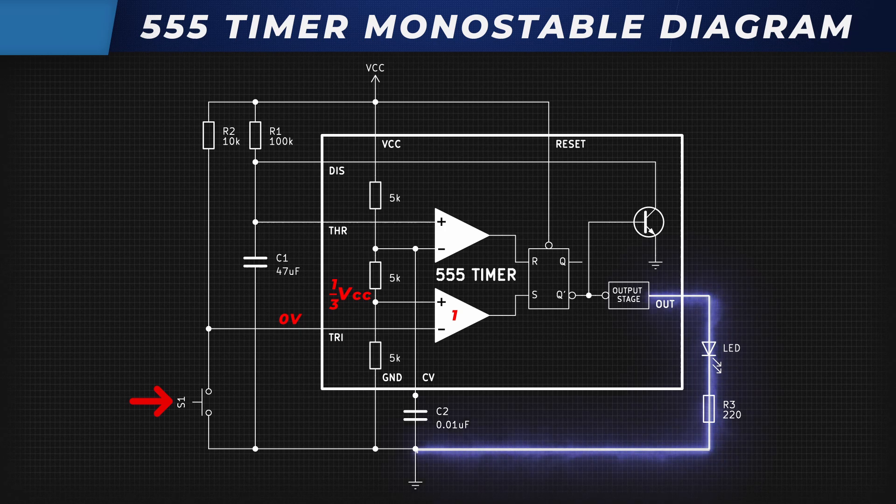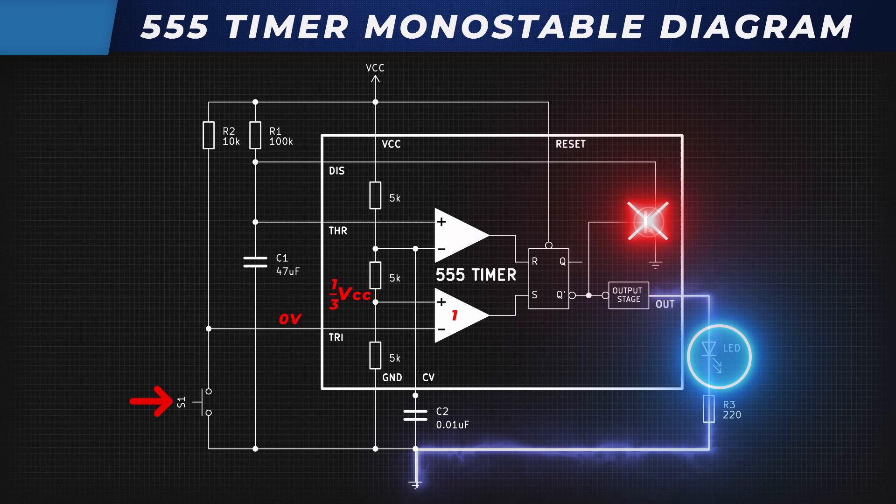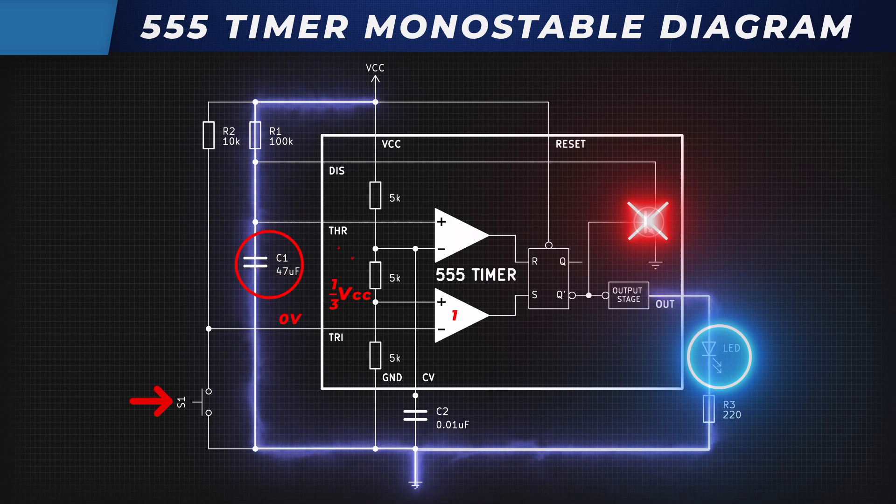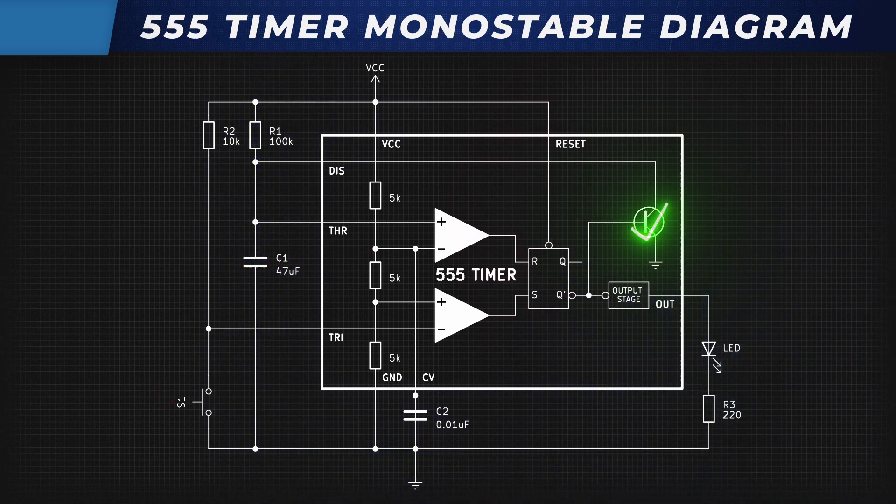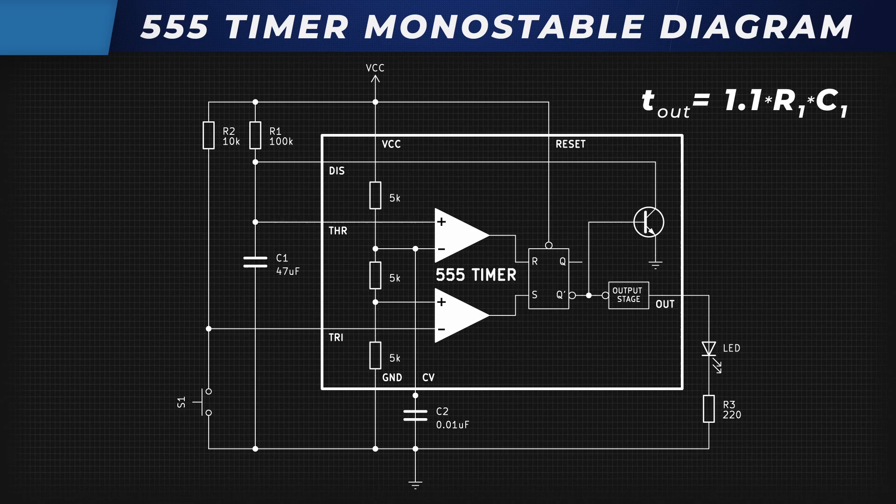Then, the flip-flop activates output driver, turns on the LED and at the same time turns off the transistor, letting capacitor C1 charge through resistor R1. When the capacitor reaches two-thirds of VCC, the threshold comparator outputs a high signal and the flip-flop resets. Due to that, the transistor turns on and once again discharges the capacitor. And the cycle repeats. Output on time can be calculated using this formula.